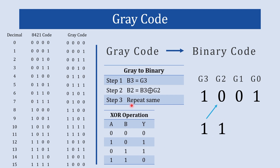In step number 3 we repeat the same process: b2 XOR g1. When both inputs are different the output is 1, so we write 1. Then we follow the same process for b1 XOR g0 — when both inputs are the same the output is 0. The binary equivalent to gray code 1001 is 1110. Gray code 1001 represents decimal 14, and binary 14 is 1110.